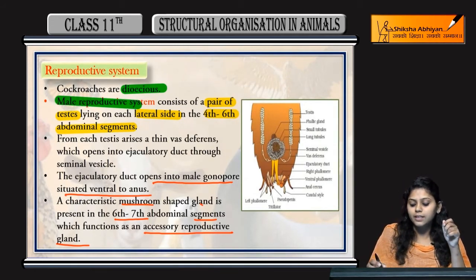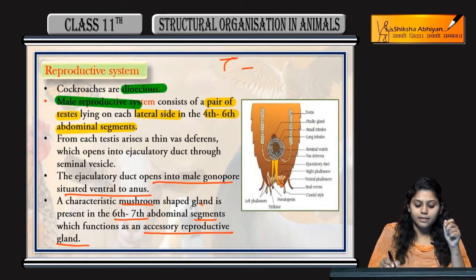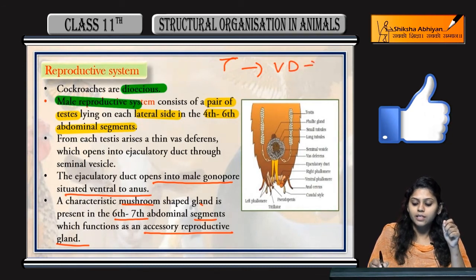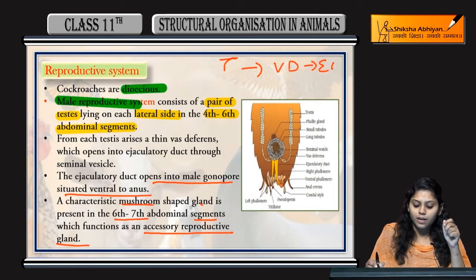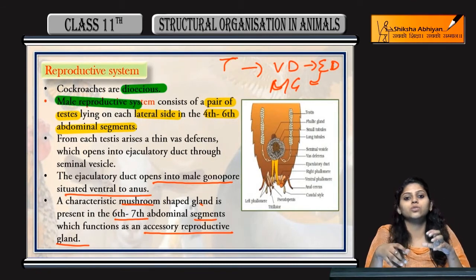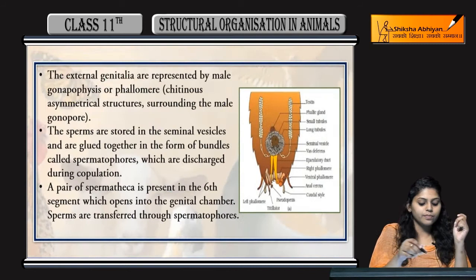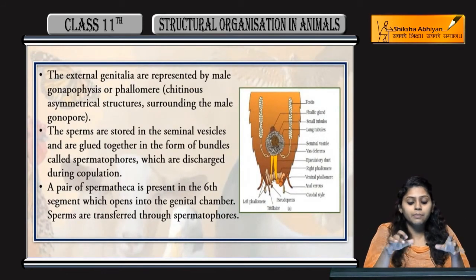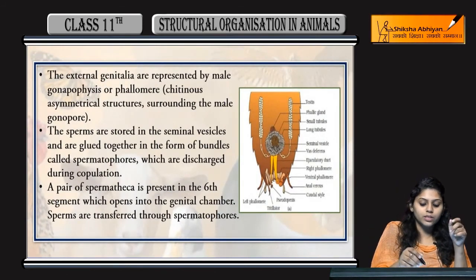To summarize what we saw in the cockroach male reproductive system: testes in the 4th to 6th segment, then vasa deferentia, ejaculatory duct, opening into the male gonophore situated on the ventral side of the anus.